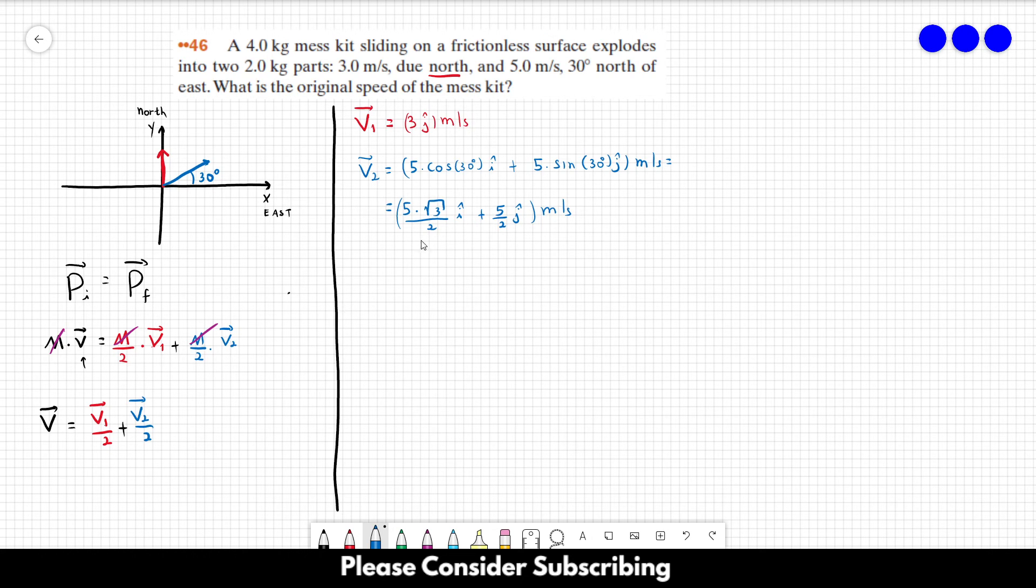So now we can replace the vectors in this equation over here. So v is going to be 3 over 2 j plus 5 over 4 square root of 3 i plus 5 over 4 j, in meters per second.